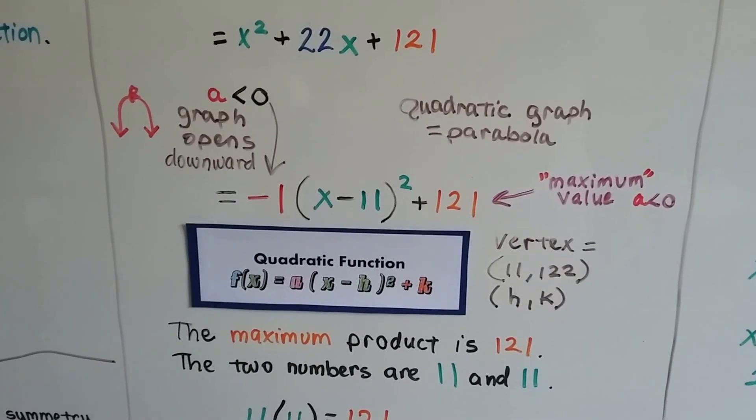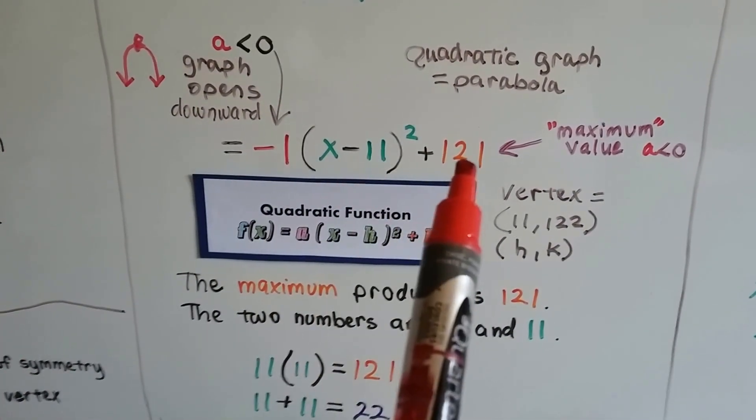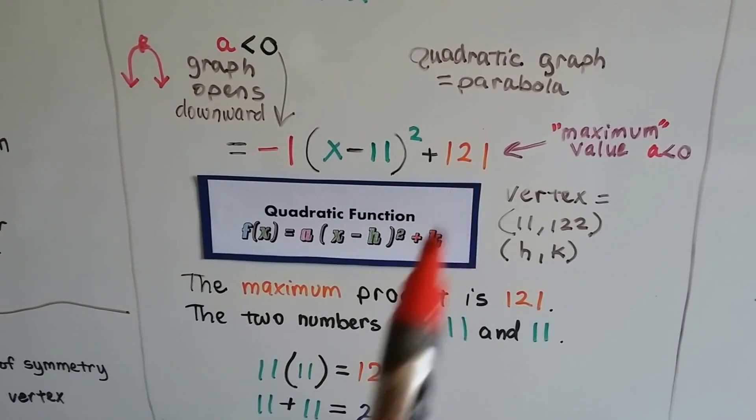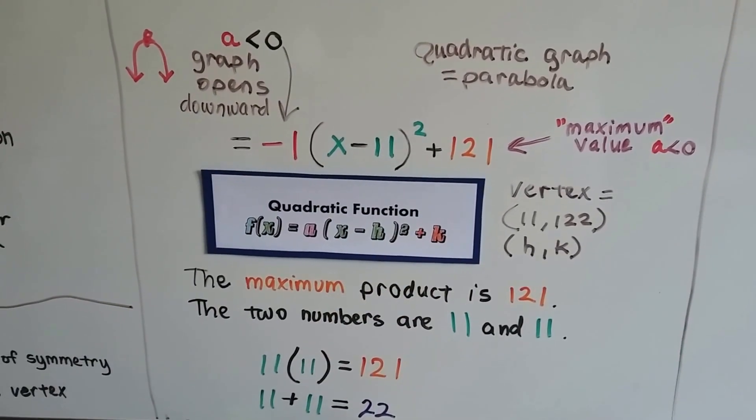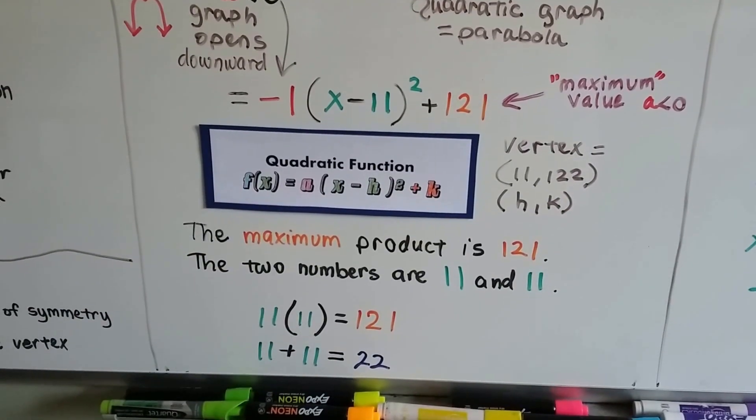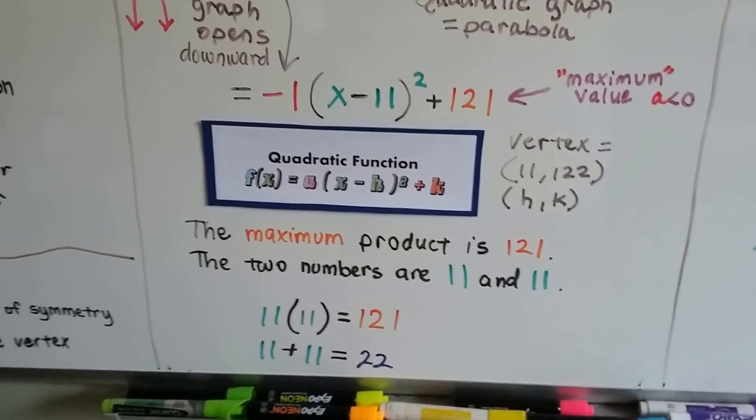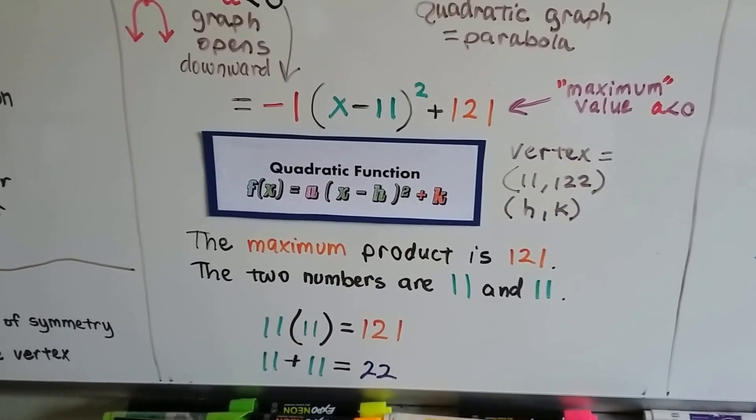Our vertex is (11, 121), that's our h and k. The maximum product is 121, and the two numbers are 11 and 11. 11 times 11 is 121, and 11 plus 11 is 22. Works out perfectly.